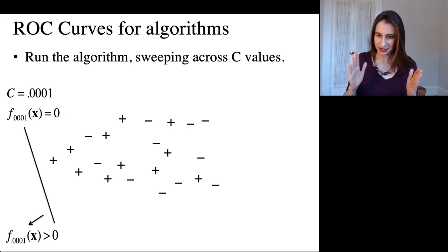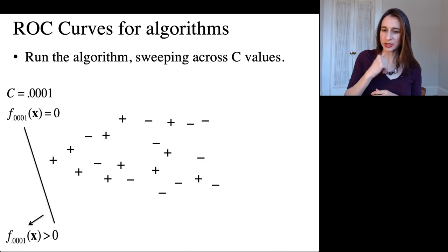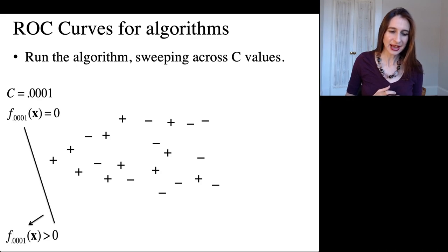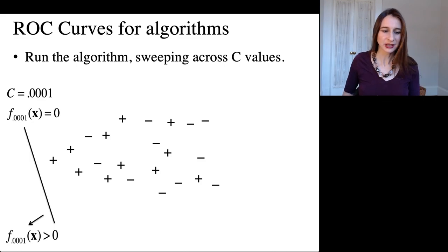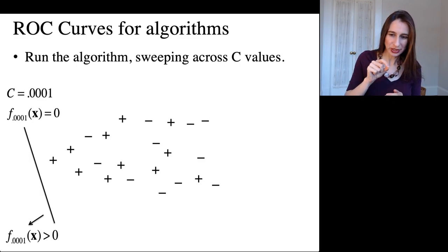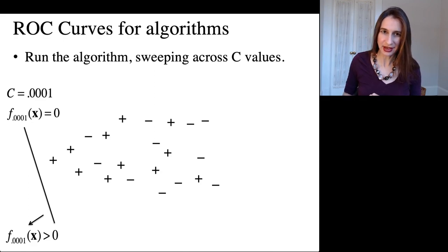Okay, so let's talk about how we do this. So let's set C, our imbalance parameter, all the way to one extreme. So at this point, it thinks that a positive is worth a tiny, tiny amount compared to a negative. So each positive is worth 0.0001 of a negative. And so because of that, the classifier doesn't care about positives and it just votes everything is negative. So that's what this classifier here is.